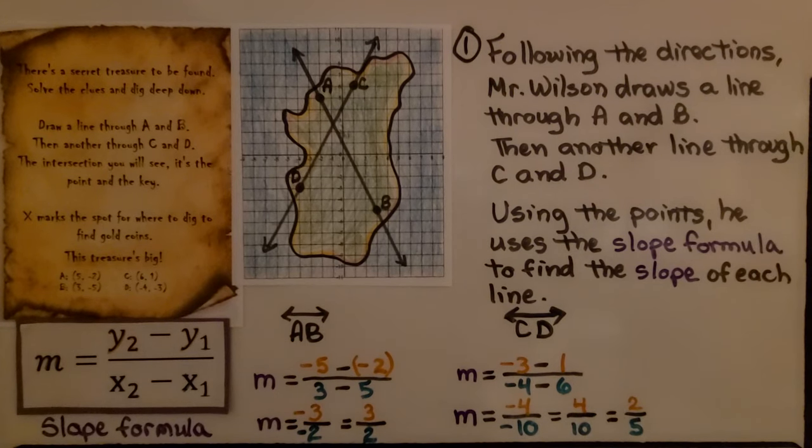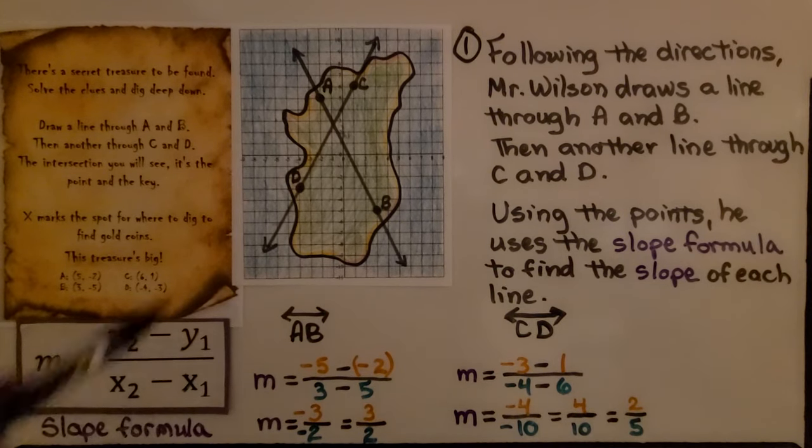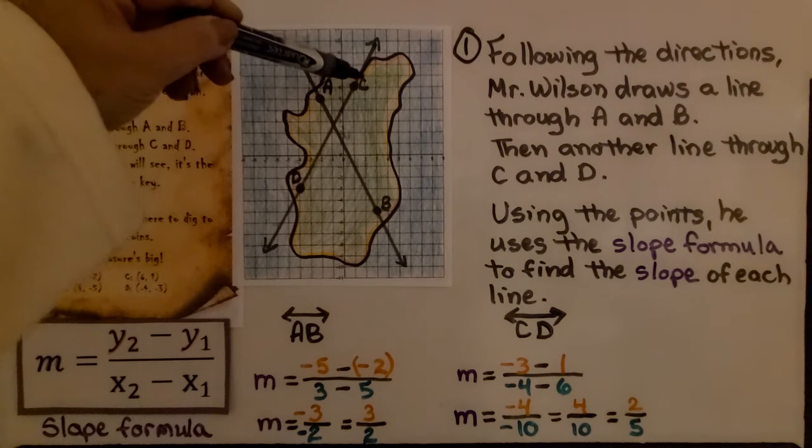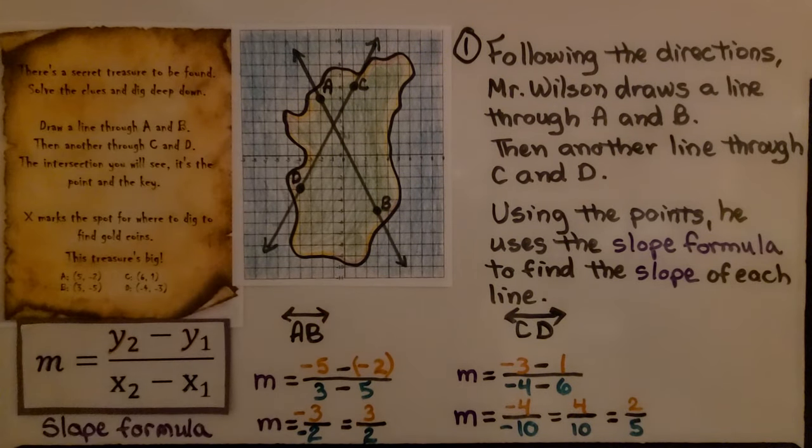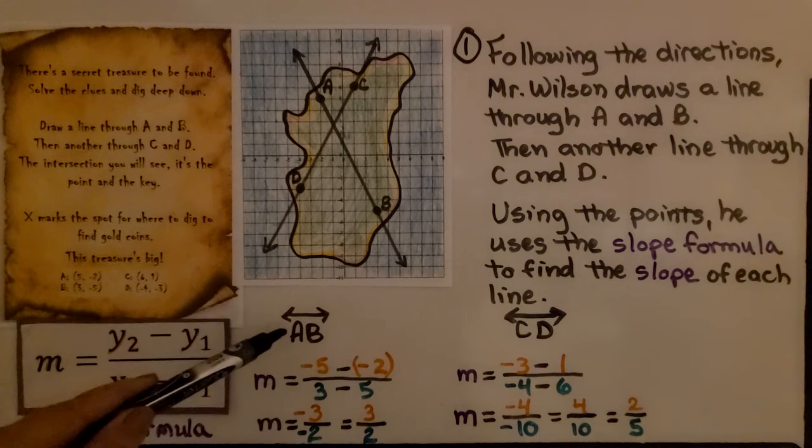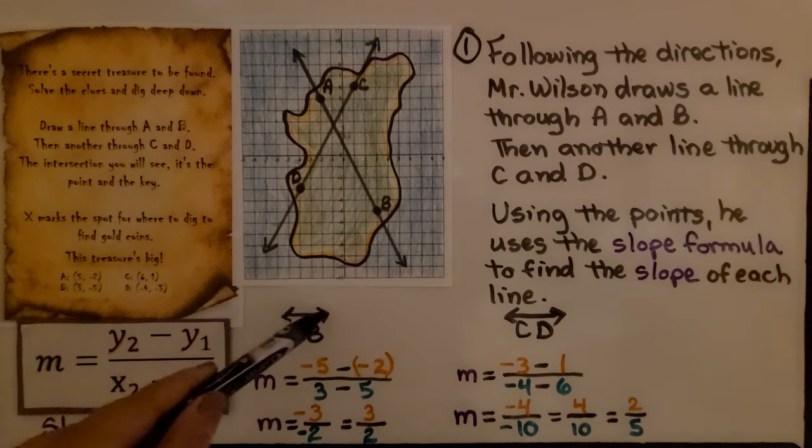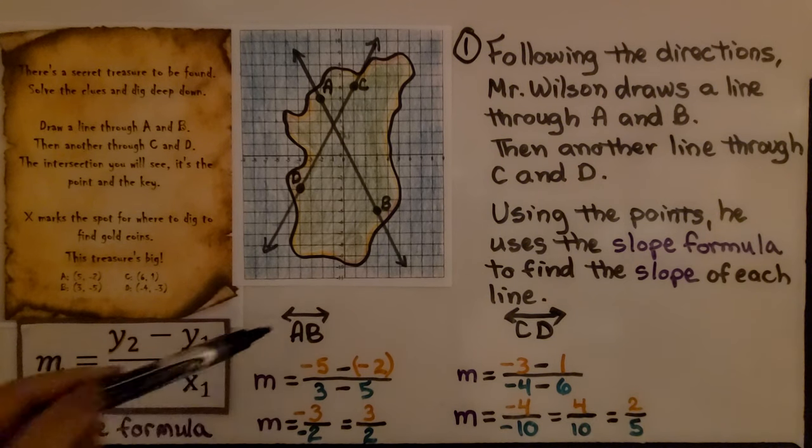Following the directions, Mr. Wilson draws a line through A and B, then another line through C and D. Using the points, he uses the slope formula to find the slope of each line. For line AB, we would write AB with a line that has arrows on both sides.